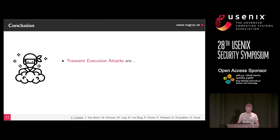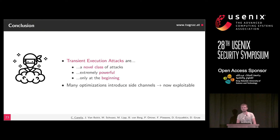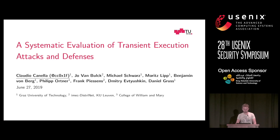To conclude: transient execution attacks are another class of attacks and they are extremely powerful. I believe we are only at the beginning. We also have to change our mindset — many optimizations introduced in CPUs introduce side channels, and we are now at a point where they become exploitable. We need to think more about those in the design of our CPUs.